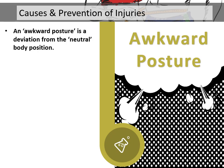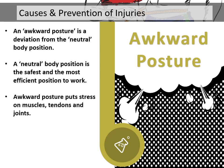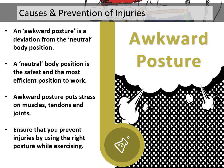Awkward posture. An awkward posture is a deviation from the neutral body posture. A neutral body position is the safest and the most efficient position to work. Awkward posture puts stress on the muscles, tendons, and joints. Ensure that you prevent injuries by using the right posture when exercising.